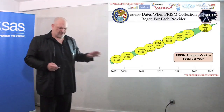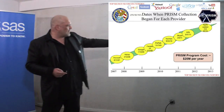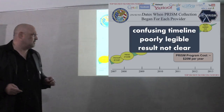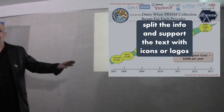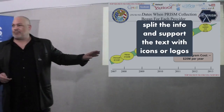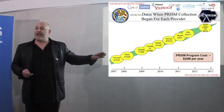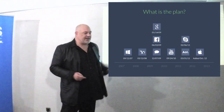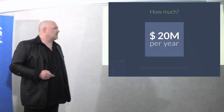Here we have something everybody knows — such timelines. We've got something that should be bigger, it's at least a confusing timeline, poorly legible, and the result is not clear what somebody wants to say. So we have to split this in two, support the text with icons or logos as well. And we get out of this chart a nice, easy timeline to see when what's happening. We have a big result side, so everybody knows it's going to be about millions.